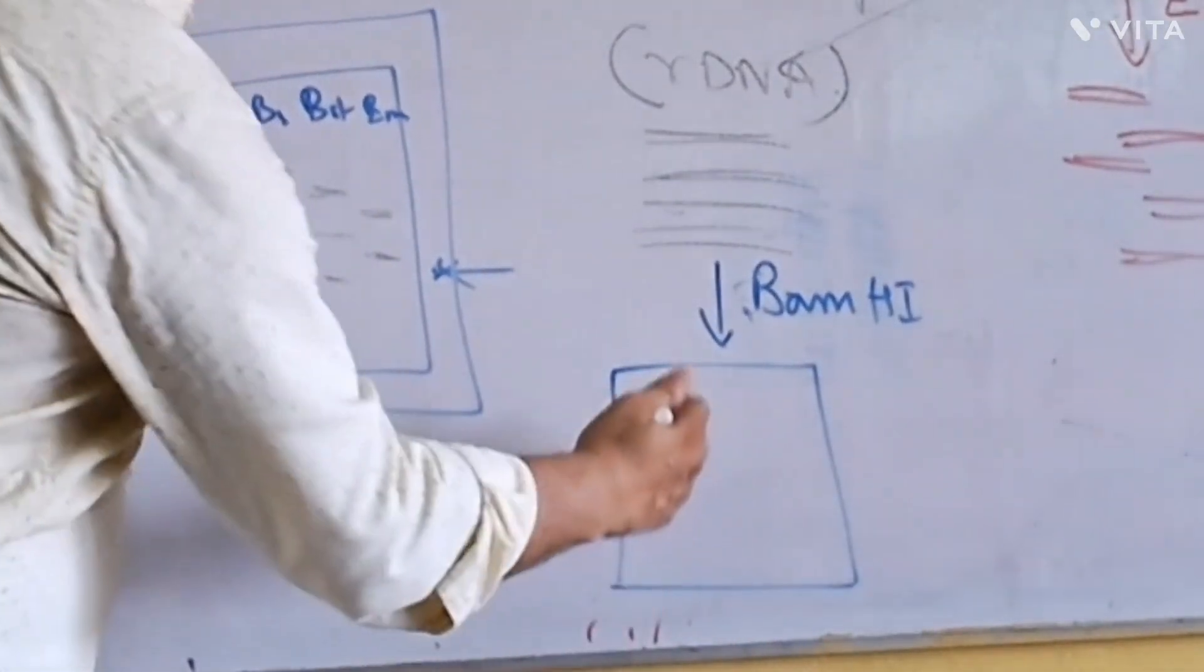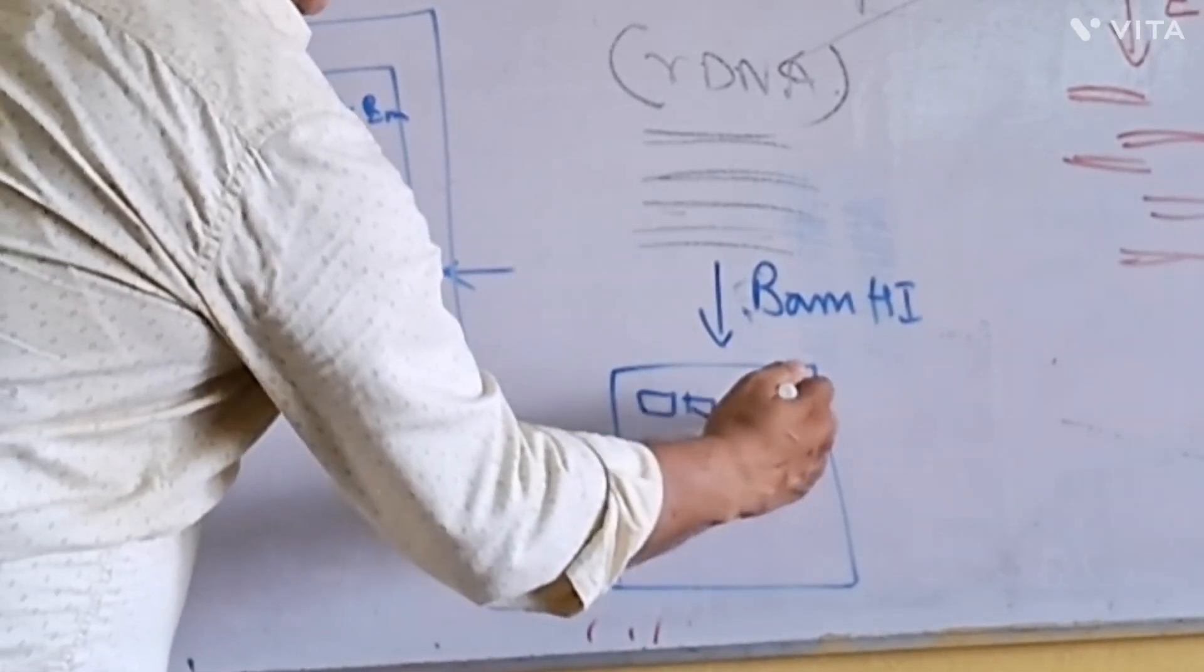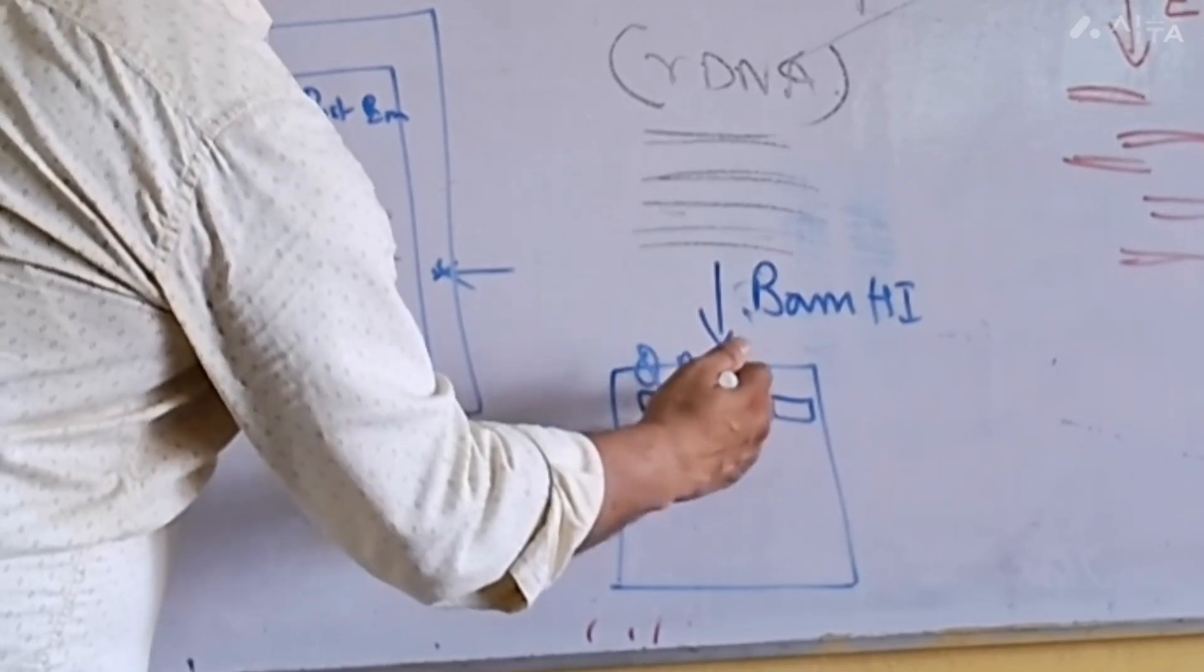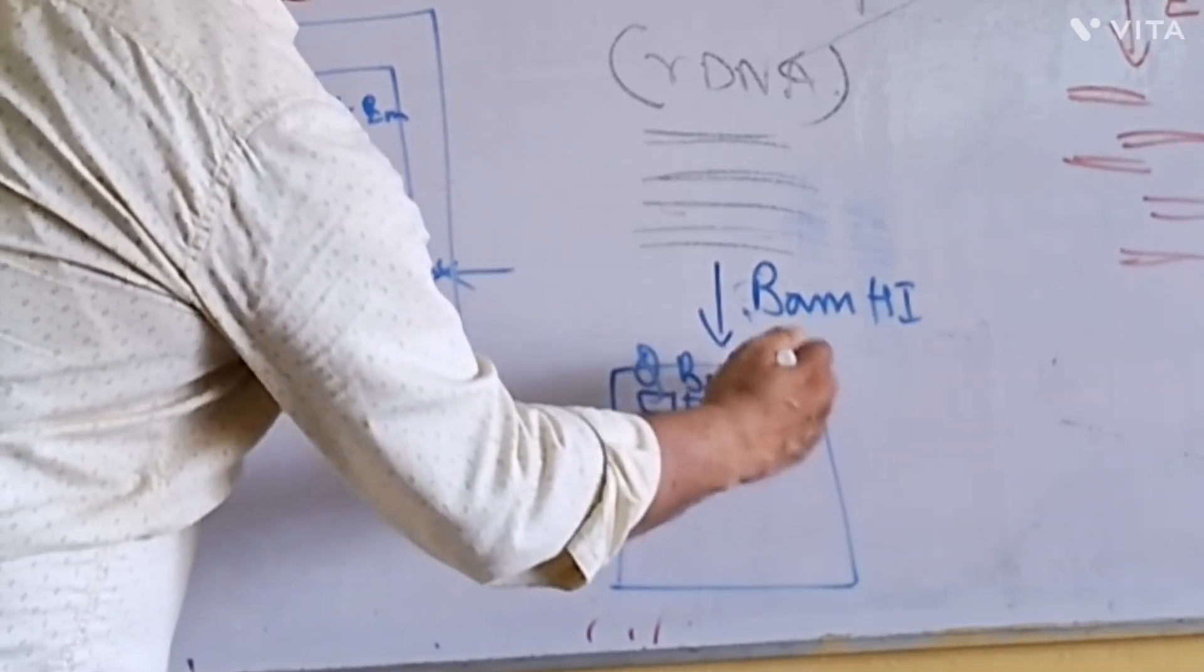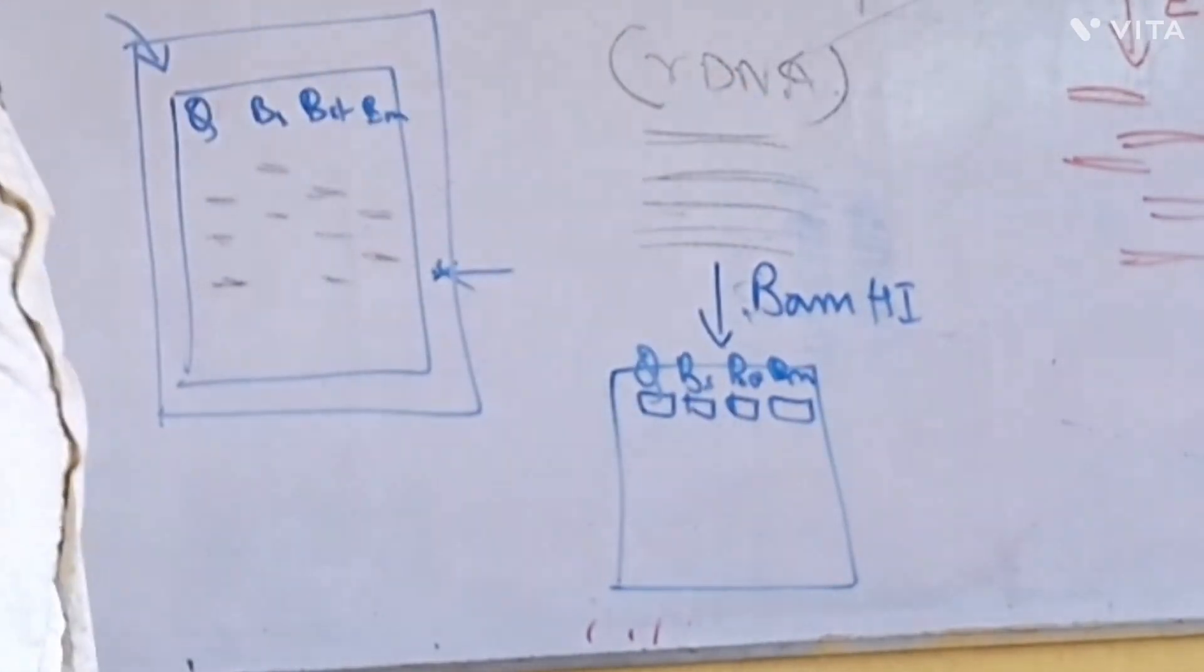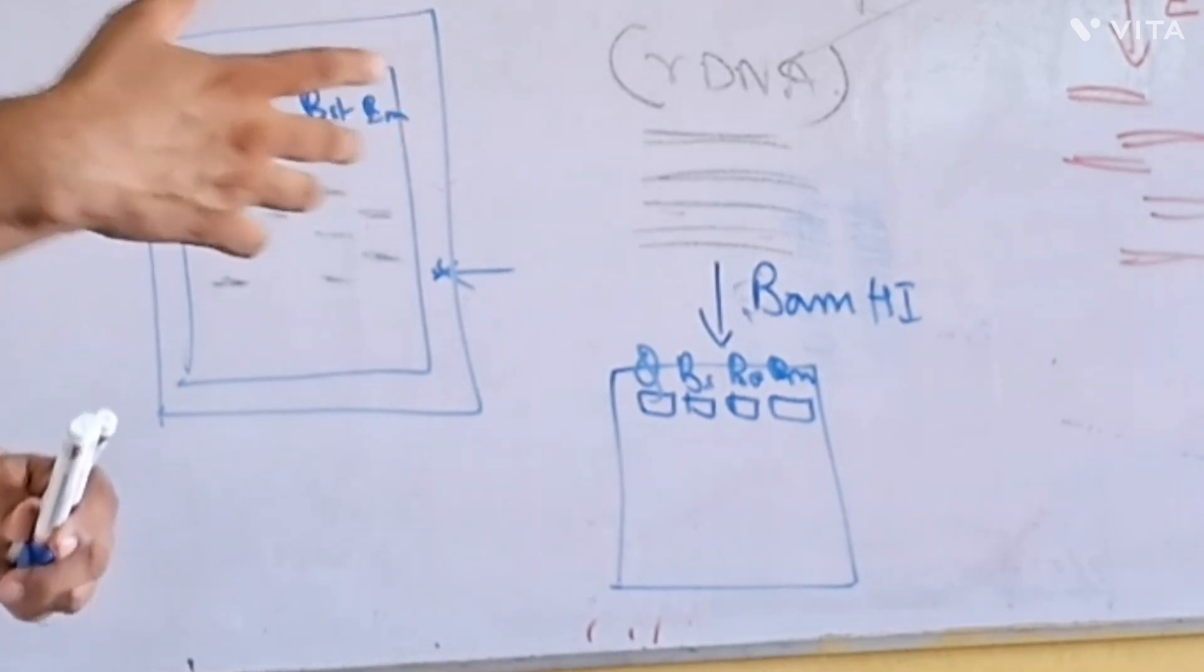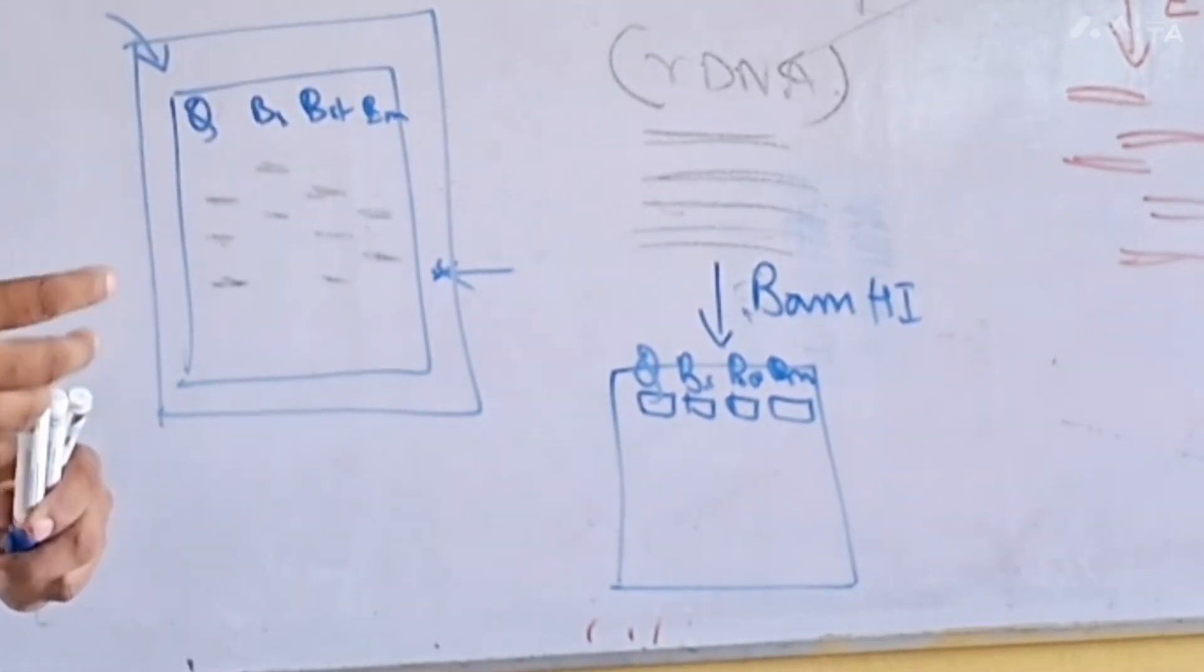It has been cut, then run the gel. In the gel you have a query sequence, and here you have Bacillus subtilis, Bacillus stearothermophilus, Bacillus megaterium, and whatever organisms you have—do PCR, rDNA amplified, and then restriction digestion with that also.